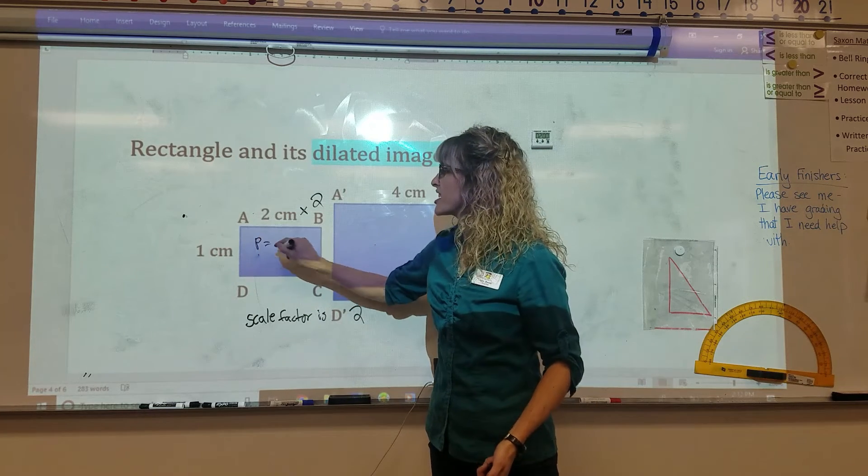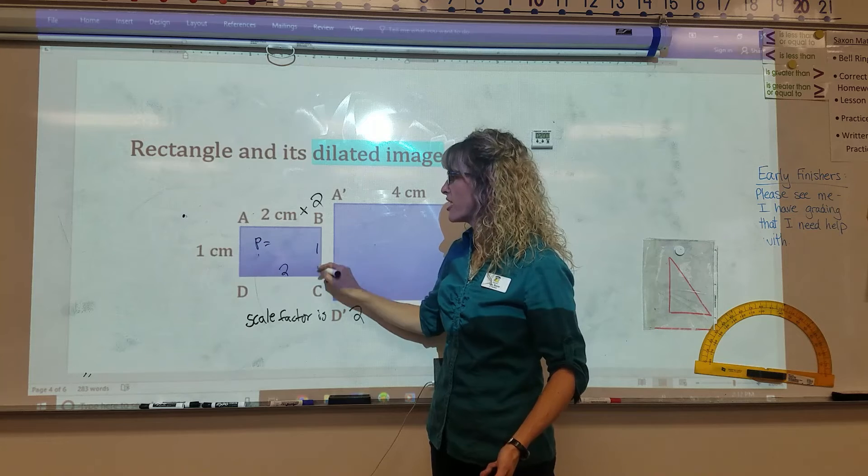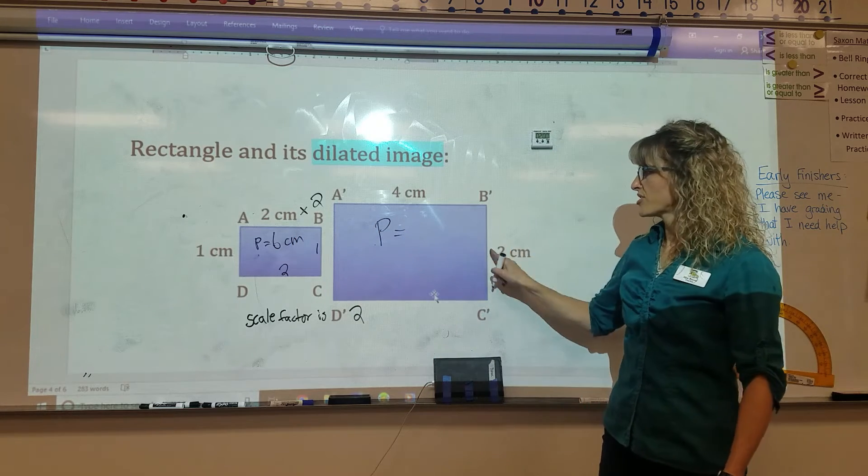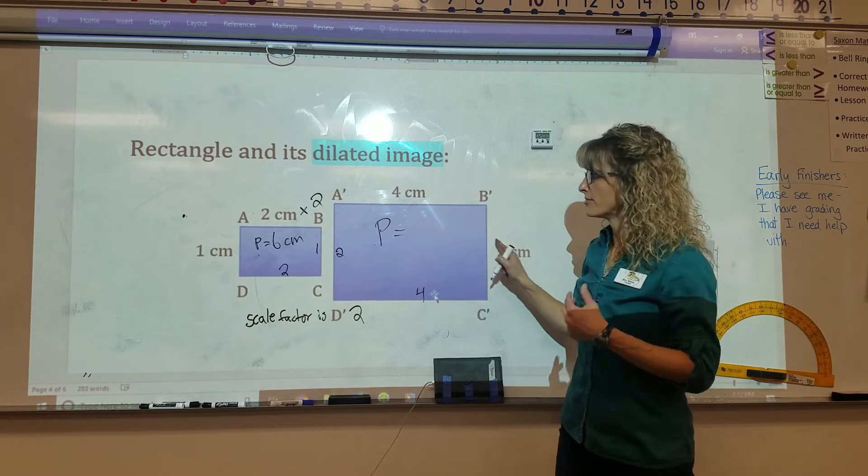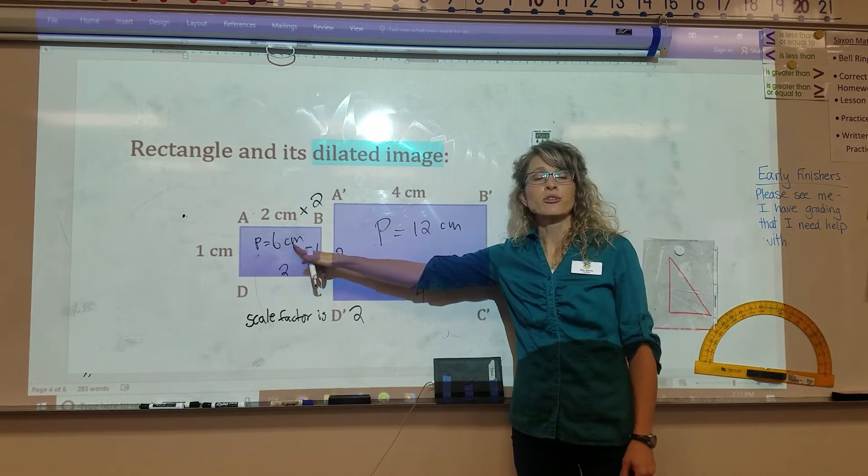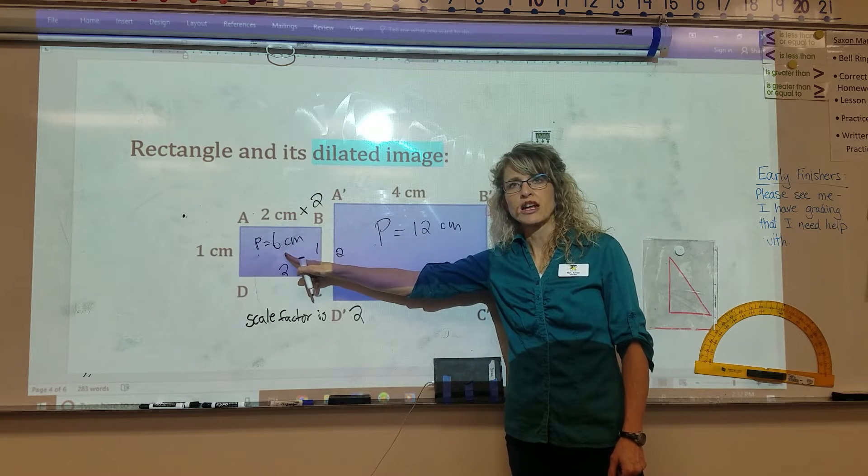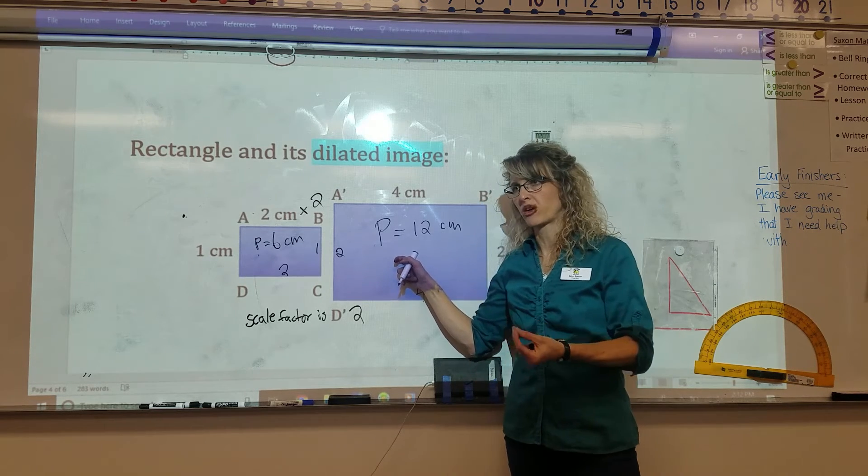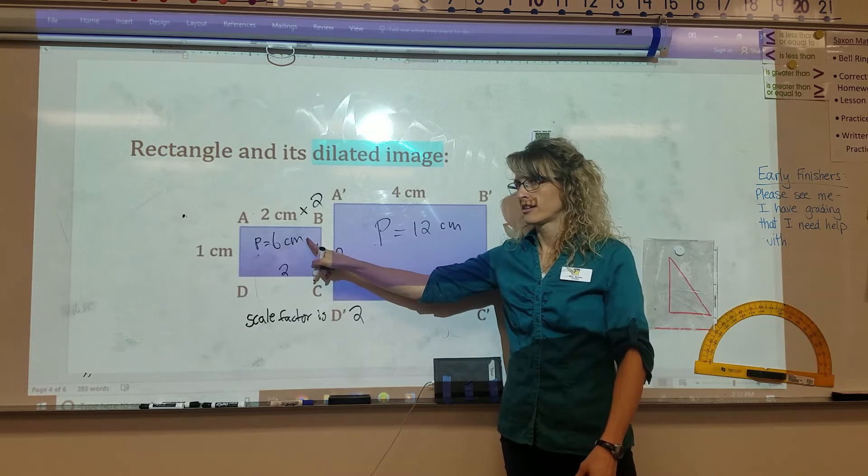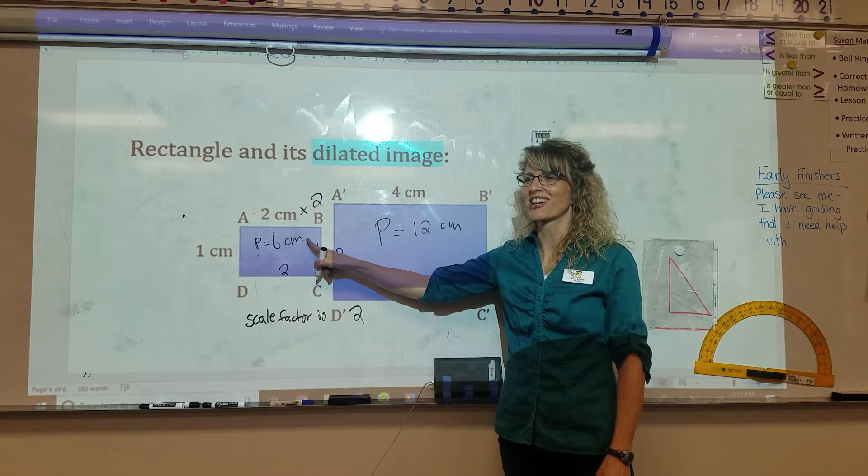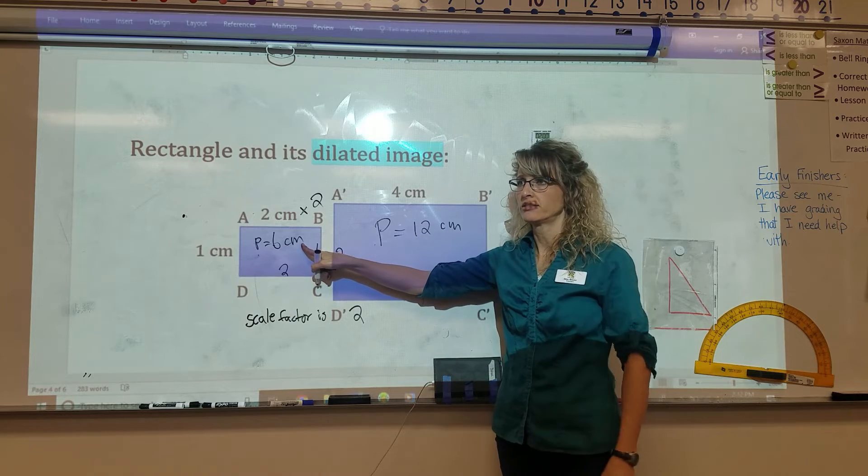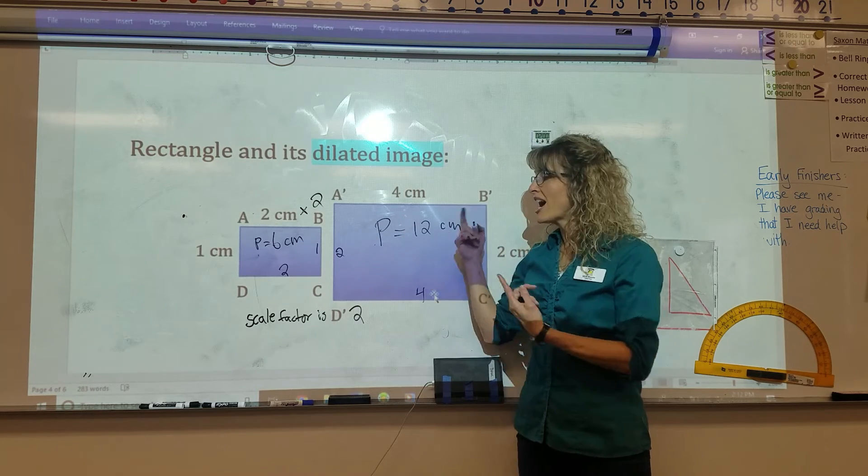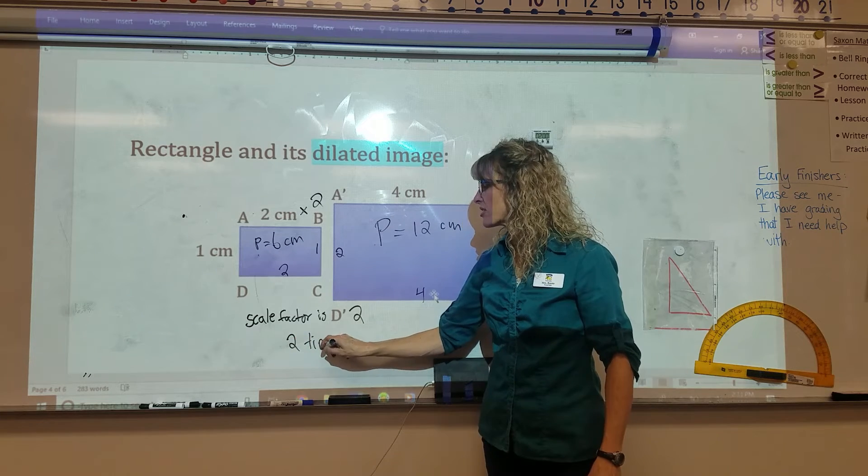What about the perimeter? Perimeter of this guy is 2 plus 1 plus 2 plus 1. Remember, all the way around the outside. I like to do it in pairs. There's 4, there's 2, so 6 centimeters. Perimeter of this one is 4 plus 2 plus 4 plus 2. Do it in pairs. 8 and 4 makes 12. Compare the perimeter. How much bigger is this perimeter compared to this perimeter? How many times bigger? Not how many like if I added or subtracted, but how many times bigger? What would I times by to get my new perimeter? I would times by 2. So this one is 2 times bigger. I can say the perimeter is 2 times bigger.